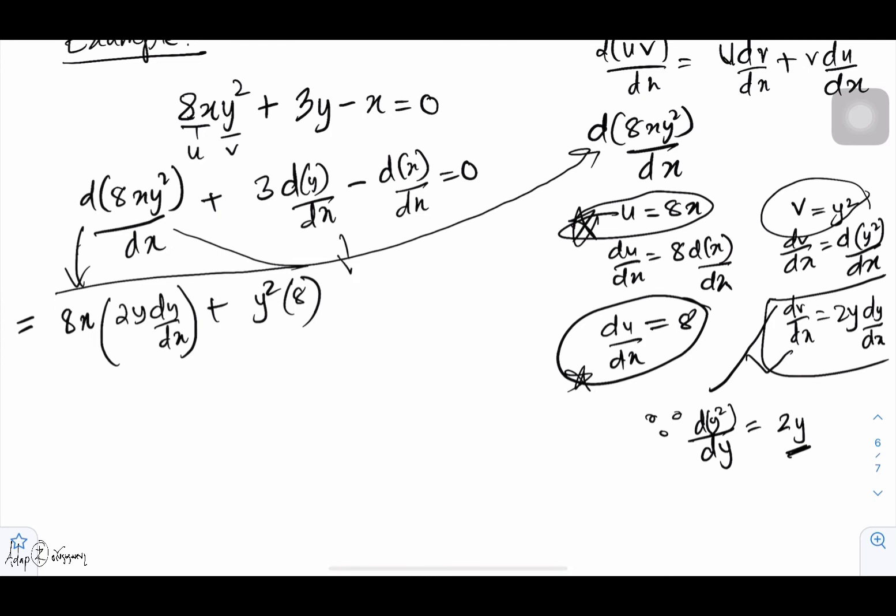Then we have this one out here, which is plus 3 dy over dx, then minus 1 equals zero. Now opening the bracket, it will be 8 times 2 is 16xy dy over dx, plus 8y², plus 3 dy over dx, minus 1 equals zero.